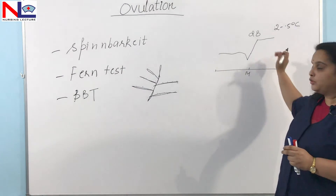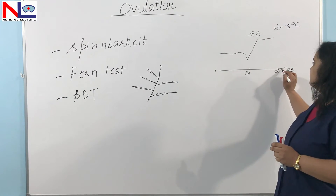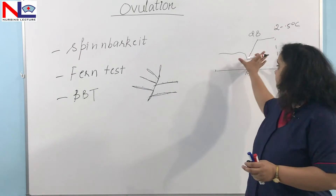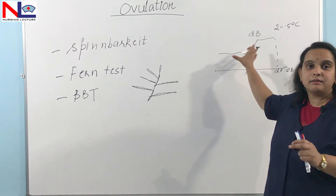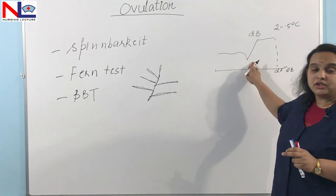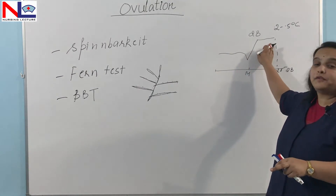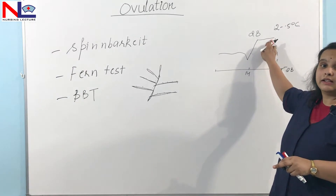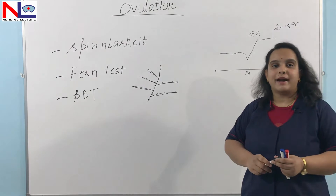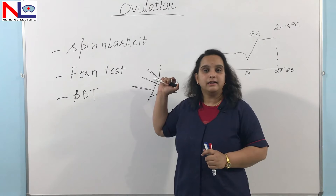It will continue until two days before the next menstrual cycle. This is how she can identify the biphasic pattern of body temperature: at the time of ovulation there is a decline, before that is the average body temperature, and after ovulation there is a rise. This biphasic pattern can easily help her calculate the fertile period.